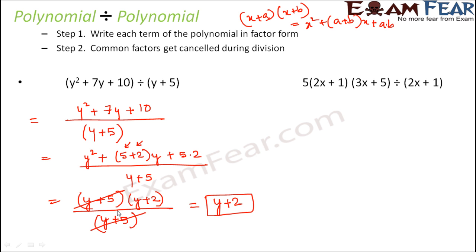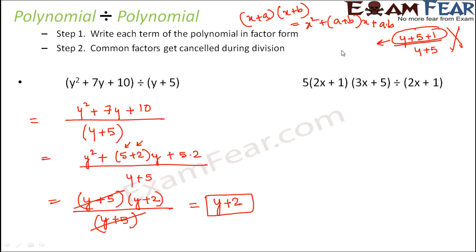Remember: (y + 5) and (y + 5) cancelled because both were factors — they appeared as multiplication terms in numerator and denominator. But if you had something like (y + 5 + 1) ÷ (y + 5), you cannot cancel, because y + 5 is not a factor there. y + 5 + 1 is one term equal to y + 6, making it (y + 6) ÷ (y + 5) — you simply cannot cancel y + 5 in that case. Please note that point.